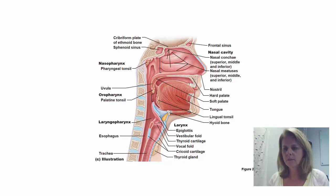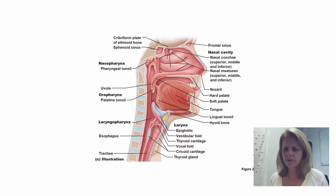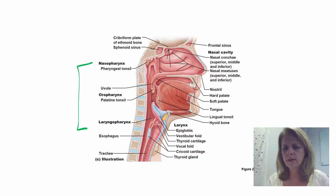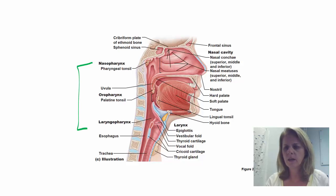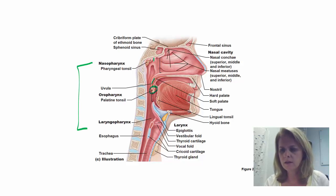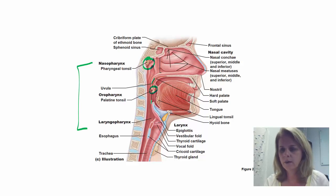Here is another image of all these things, labeled for you — the things you have to know. I've got your nasopharynx, oral pharynx, and laryngeopharynx labeled. I've got the uvula labeled. I've got your palatine tonsils, pharyngeal tonsils — also known as your adenoids — and your lingual tonsils all identified.